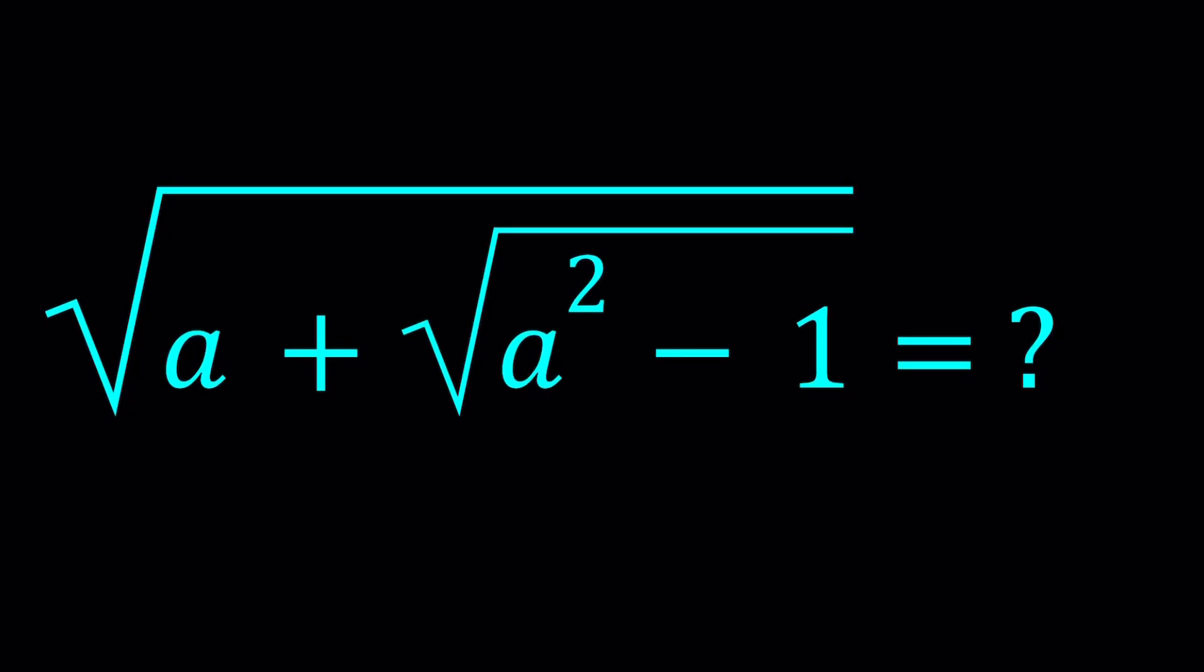Hello everyone. In this video, we're going to be simplifying a radical expression. We have the square root of a plus the square root of a squared minus 1. We're going to simplify this expression and find something in terms of a. I'll be presenting two methods. But before we get into the solution methods, I want to raise a question. Can this be simplified?